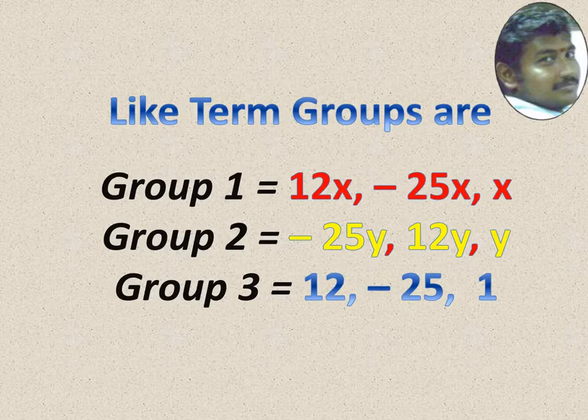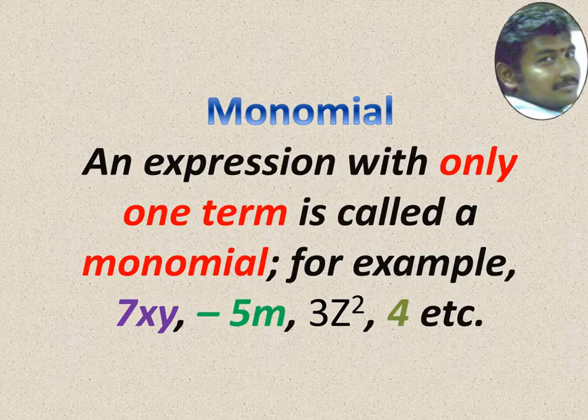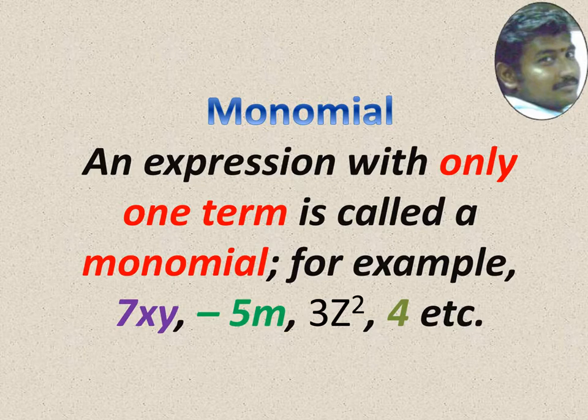Based on terms, we will have the polynomial — like monomial. An expression with only one term is called a monomial. For example, 7xy, minus 5m, 3z squared, 4, etc. Only one term is there, then that expression is called a monomial.